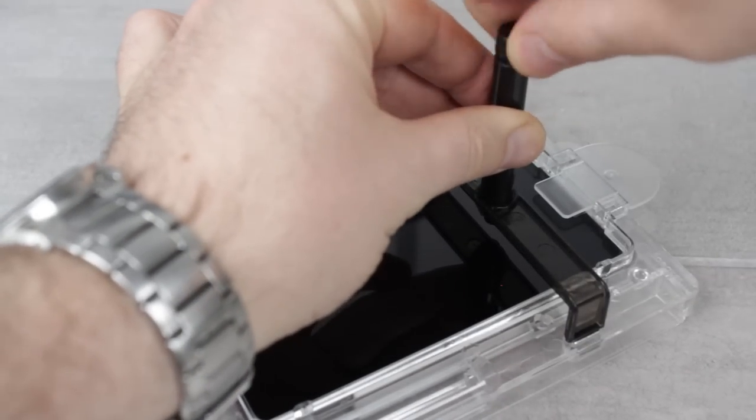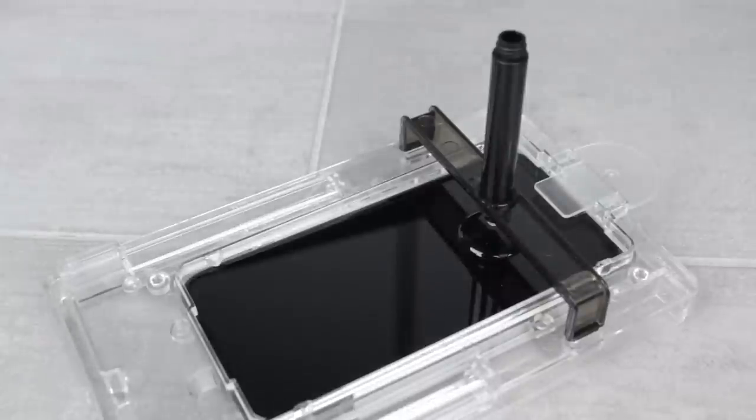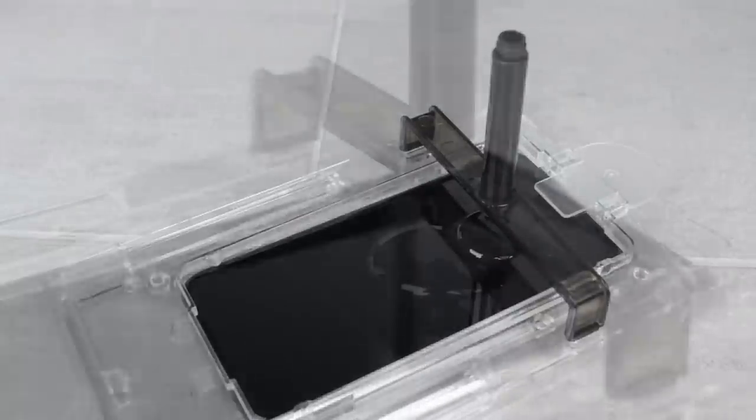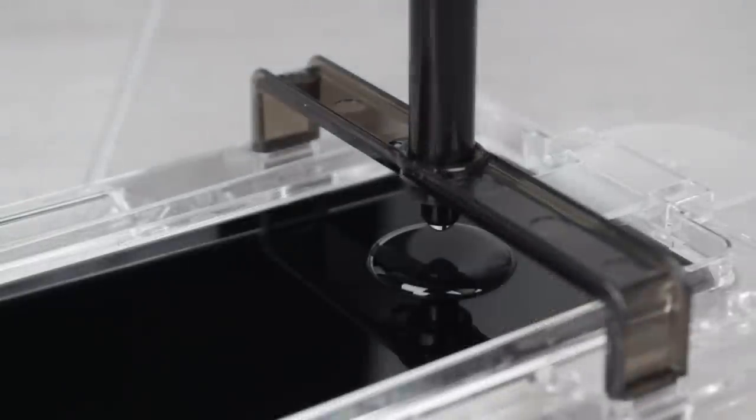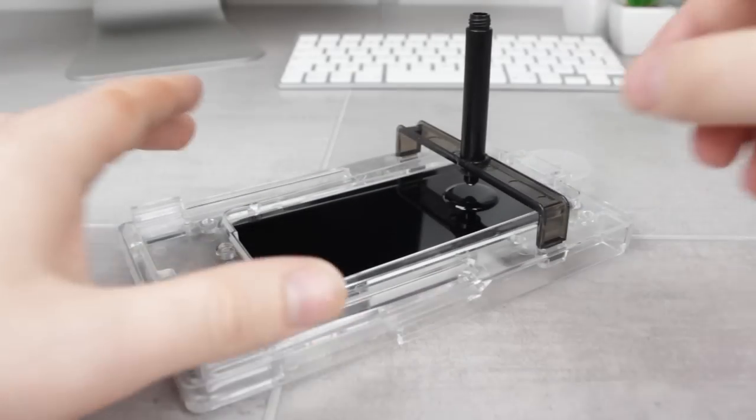By removing the second and smaller cap, the adhesive will be free to run onto the glass. You'll want to leave this to happen for around 30 to 40 seconds so as to make sure that all of the liquid is out and on the phone.